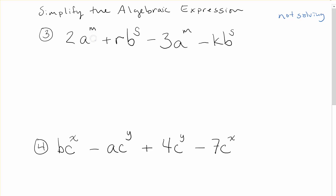I've got an a to the power of m, and I see I have a second a to the power of m. So I can go ahead and I'm going to circle those and say those are like terms. The next thing I'm going to notice is that I've got an r and a b with an s, and I've got a k and a b with an s. So we're not exactly sure what to do here because it looks very different.